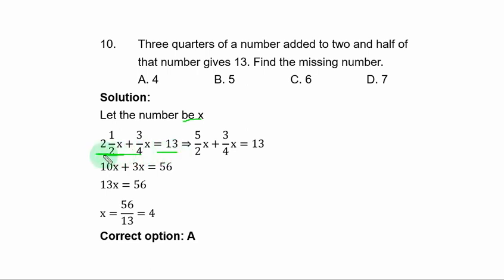If you convert the first term to improper fraction, you have 5 over 2 times x plus 3 over 4 times x equal to 13. Multiply through by 4 to clear fractions, you have 10x plus 3x equal to 56. That is 4 times 13. If you add the common terms, you have 13x equal to 56. Divide through by 13. x is equal to 56 over 13. And that is 4. So, A is the correct option.